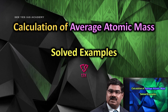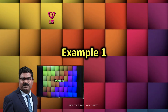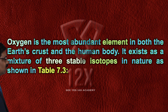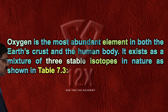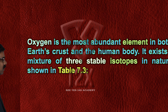Solved Examples. Example No. 1: Oxygen is the most abundant element in both the earth's crust and the human body. It exists as a mixture of three stable isotopes in nature, as shown in Table 7.3.